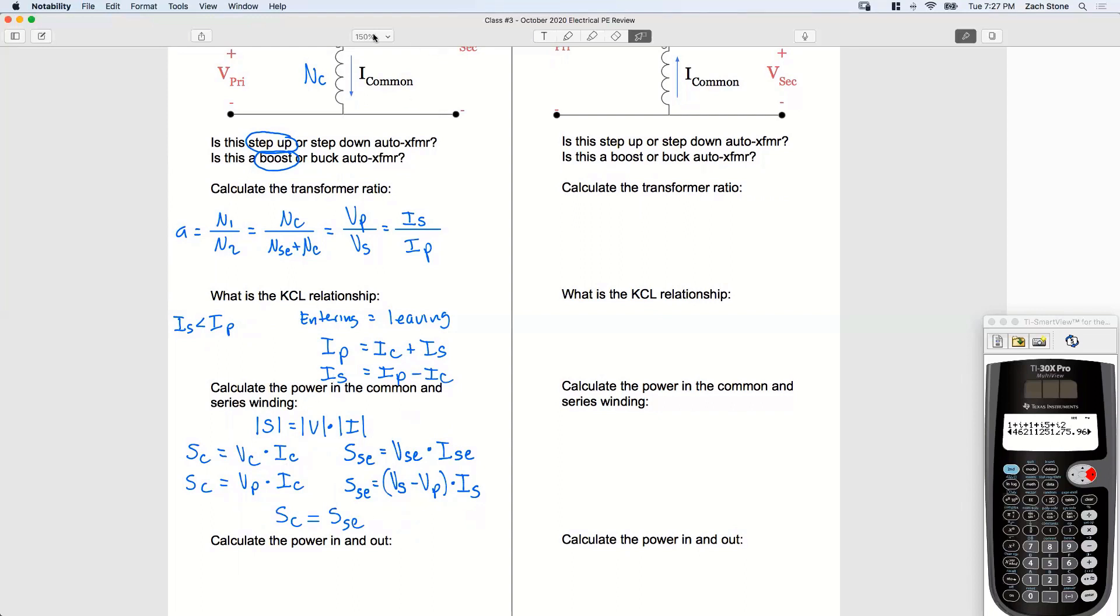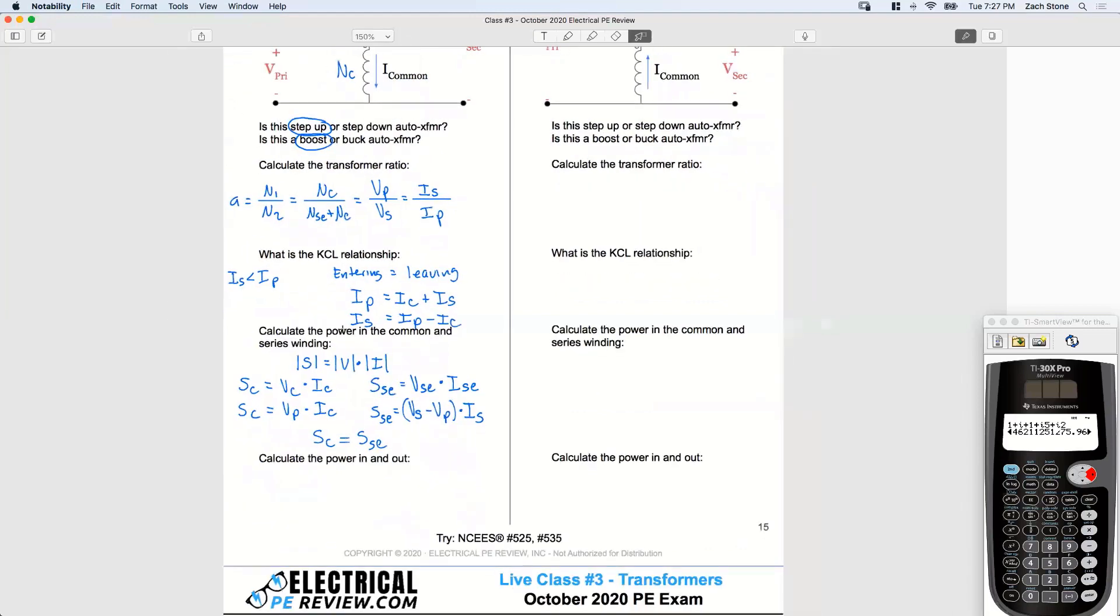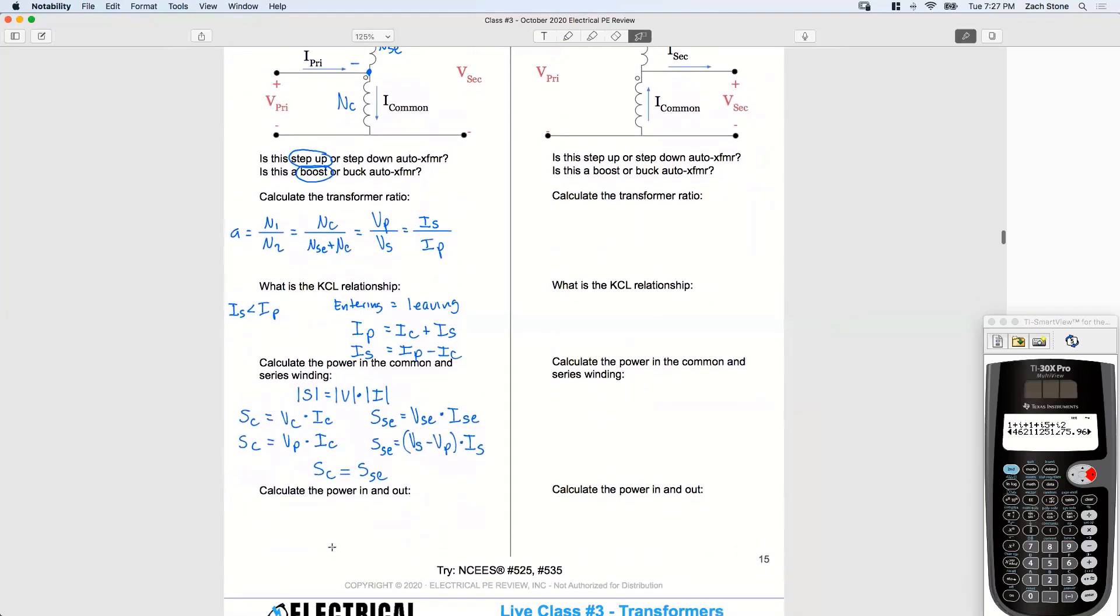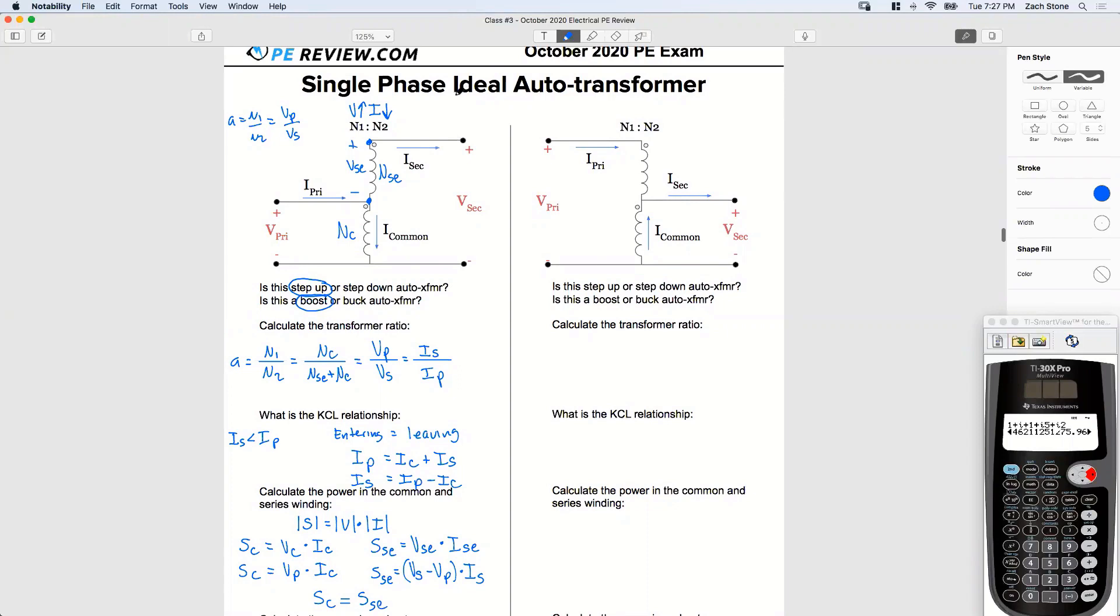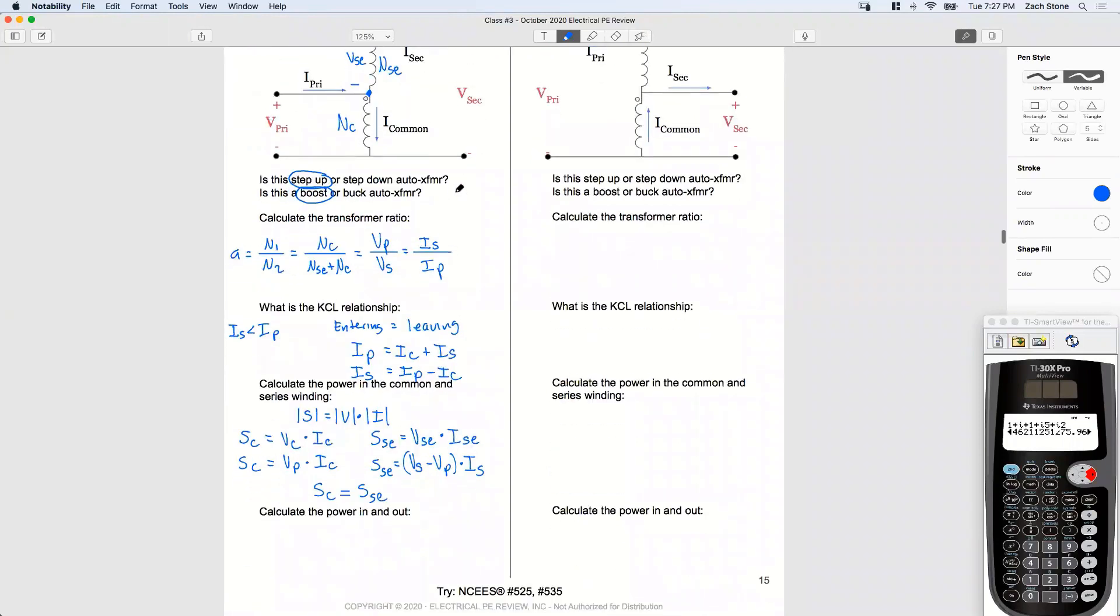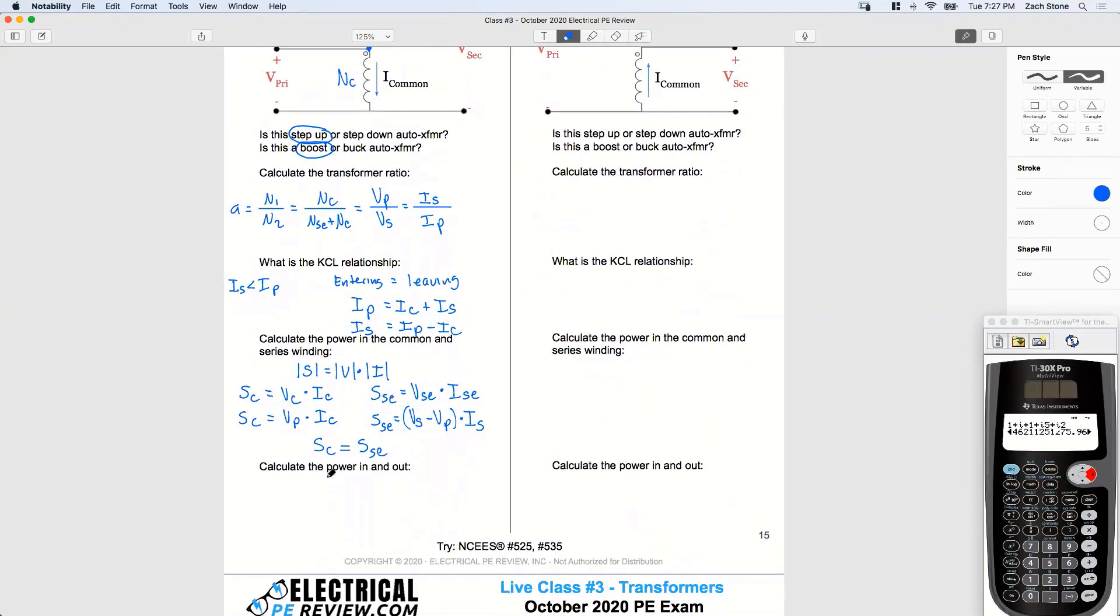All right, last, how do we calculate the power in and the power out of this step-up auto transformer? So we're assuming this is, what kind of auto transformers are this? This is ideal. What's the power relationships between power in equals power out for ideal? In other words, we'll call this S primary and S secondary, or S in and S out. If our efficiency is one, is unity or 100%, then these two are equal.